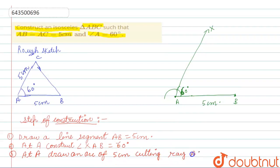Draw ray AX at point C. So at point A, we have drawn an arc of 5 cm cutting AX at point C.